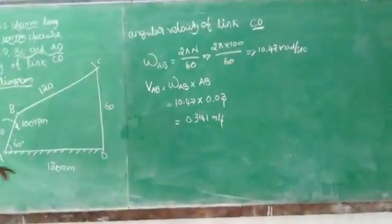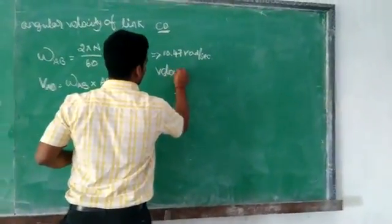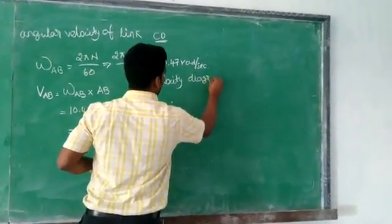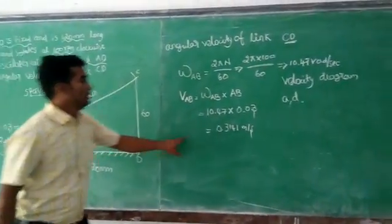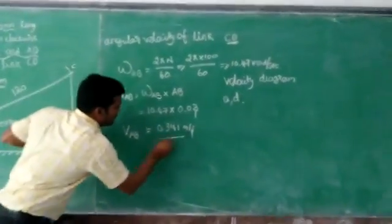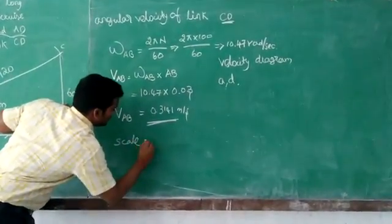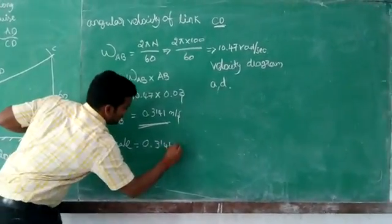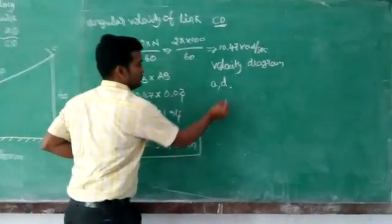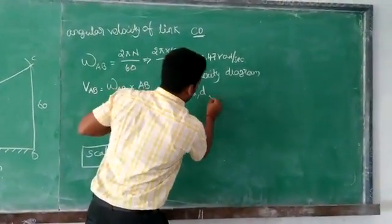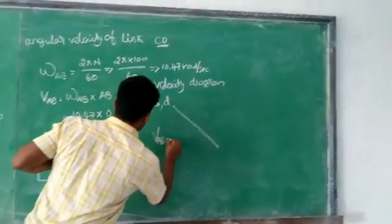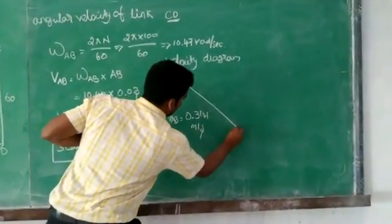So first draw the velocity diagram. Here AB is fixed, take one point A. AB is fixed, so we already know that velocity of AB is equal to 0.314 meters per second. Scale: 0.314 equals 1 centimeter. So here, draw a perpendicular line AB. A is perpendicular to A and B. So velocity of AB is equal to 0.314 meter per second at B.